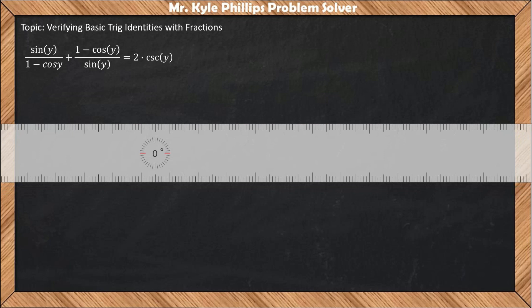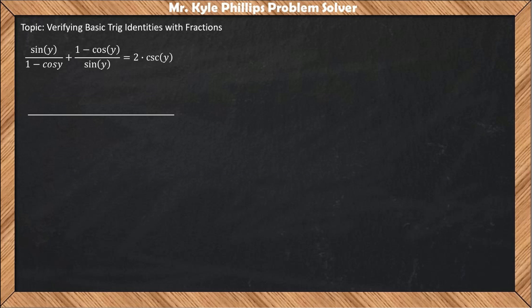The easiest way to get common denominators when dealing with fractions is to use the least common multiple. When we have terms, we're going to multiply these two terms together. So we'll write out 1 minus cosine y times sine y.